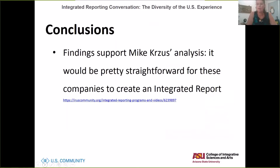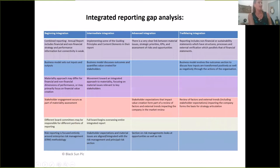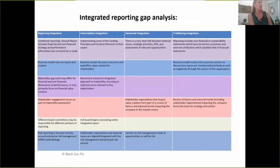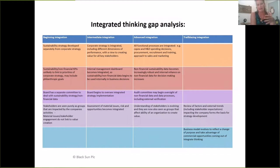The overarching conclusions support the analysis that companies are doing things with multiple capitals — they talk about it in bits and pieces, but not in a connected way. With a little training and thinking, it would be pretty straightforward for them to create an integrated report. Gap analysis tools — showing how to get from beginning integration to trailblazing integration — could serve as a strategic roadmap. The biggest challenge is weaving in the thinking behind it: how to connect the front-end resource inputs and tell the story of how you turn them into outputs, outcomes, and impact.